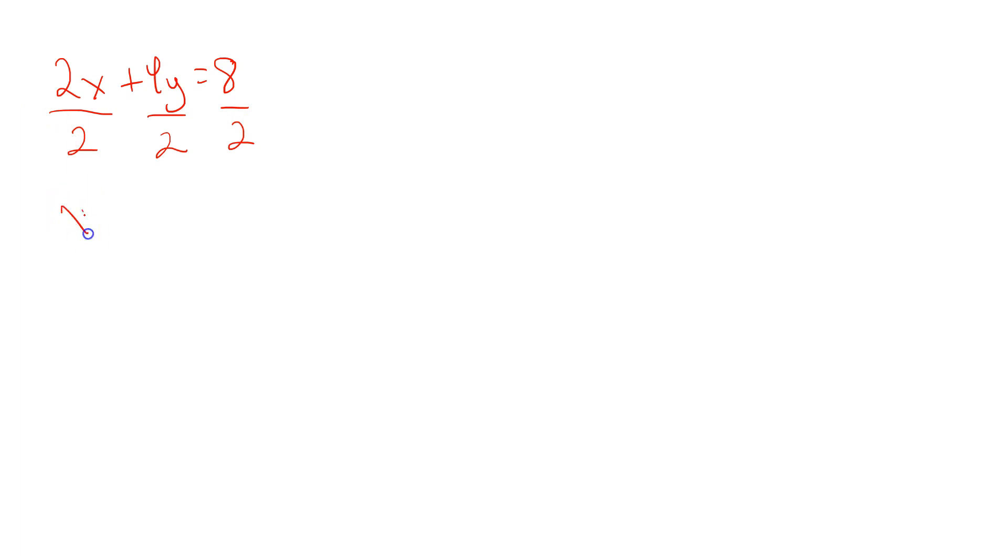So I'm going to have here x plus 2 divided by 2 is 1x. Then here, I have 4 divided by 2, which is 2y. Then the right side, 8 divided by 2 is 4. And now, I'm going to find the x-intercept and the y-intercept. As I've shown you before, when you find the x-intercept, you set y equal to 0. So for the x-intercept, y will be equal to 0 always. And you then proceed as follows: x plus 2 times 0 equals 4. This term vanishes because it's 0. And you end up with x equals 4. That's the simple value of the x-intercept.